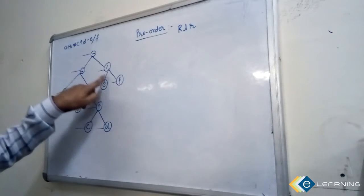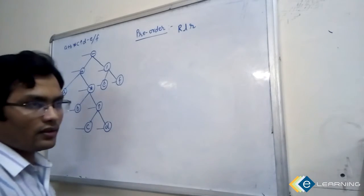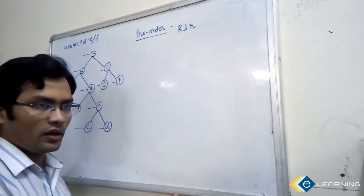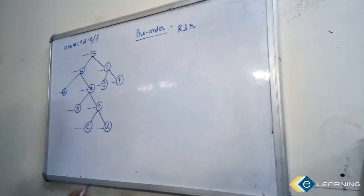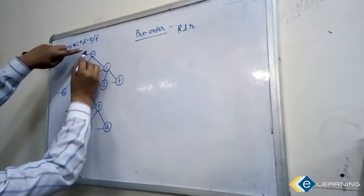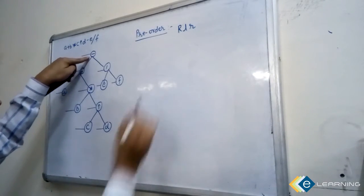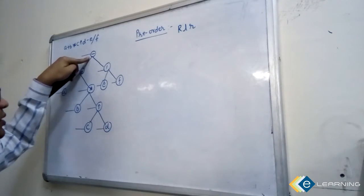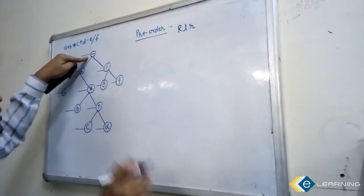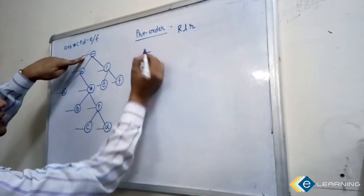Pre-order means mark the line before the node — that is what 'pre' means. Now traverse from the root, and whenever this marked line is intersected, write down that node. That is the simple shortcut for pre-order traversal.